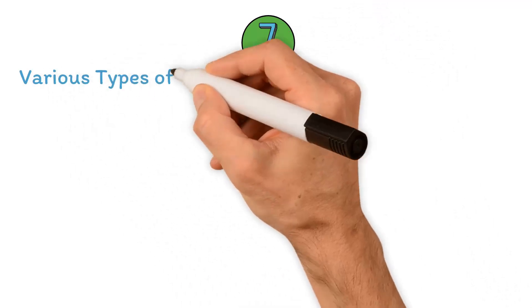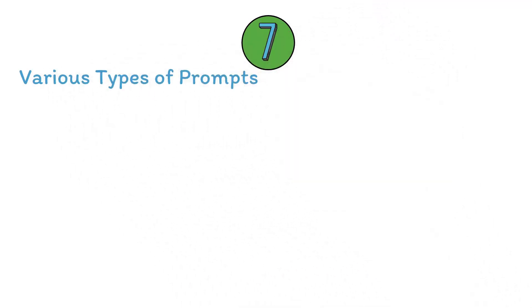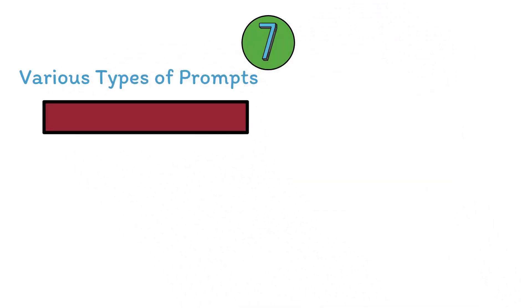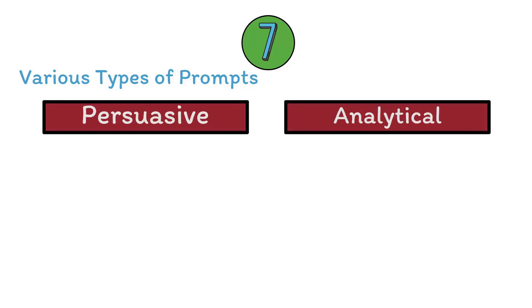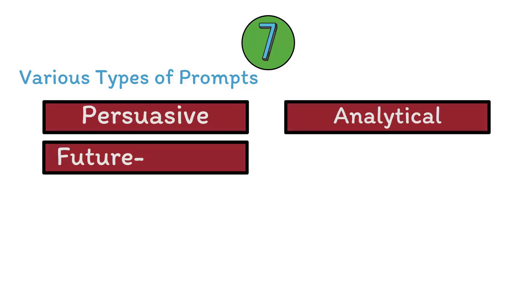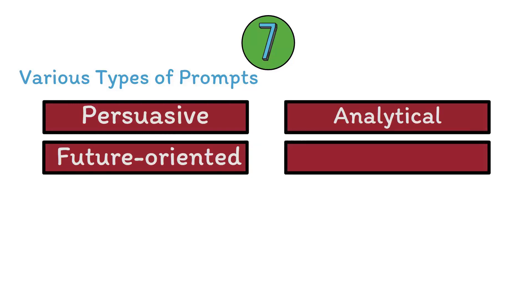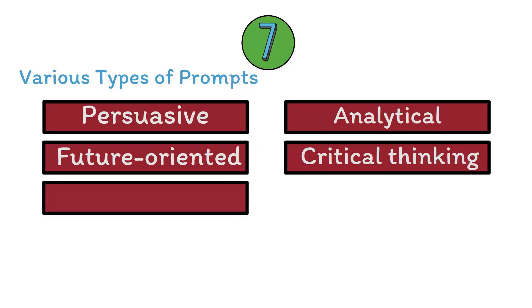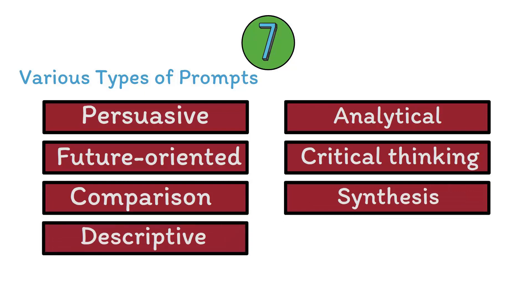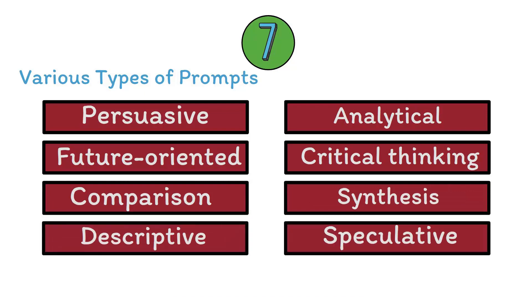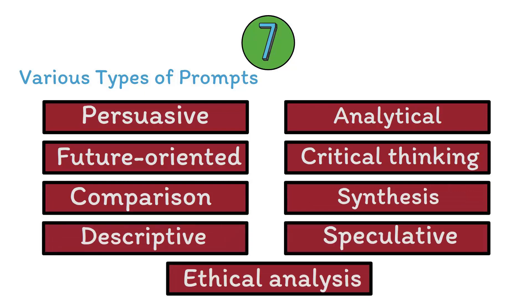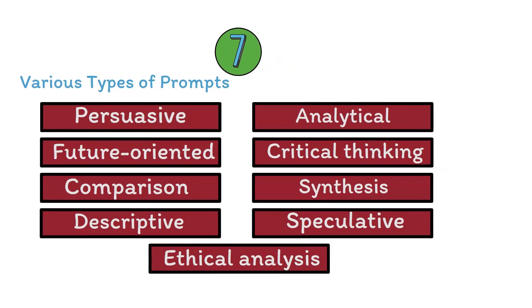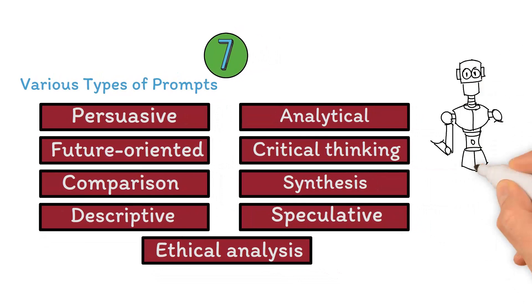Strategy seven: various types of prompts — employing a range of prompt types such as persuasive, analytical, future-oriented, critical thinking, comparison, synthesis, descriptive, speculative, and ethical analysis to achieve diverse and engaging responses from the AI model.